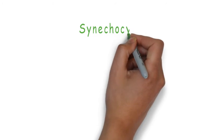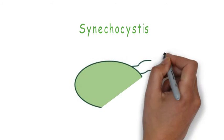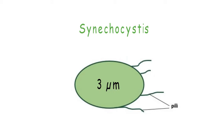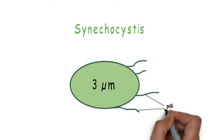The cyanobacterium Synechocystis was used for the study. Synechocystis cells are spherical with about 3 micrometer diameter and they move using special tentacle-like structures called pili.